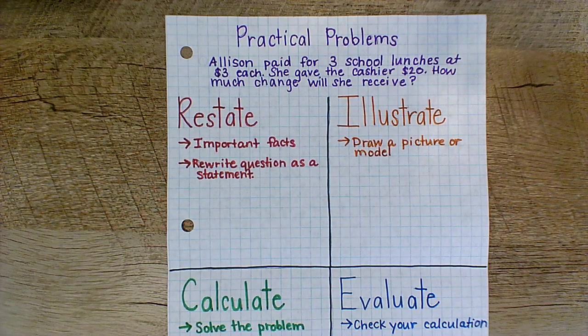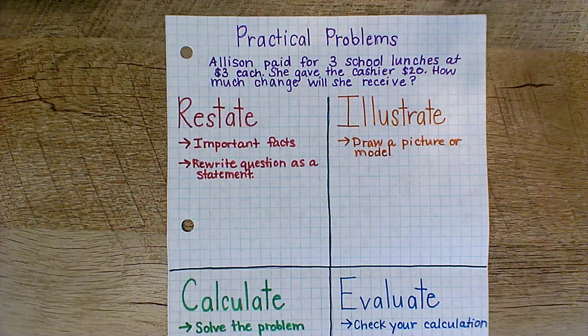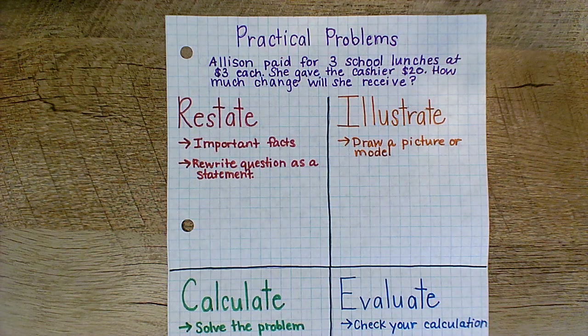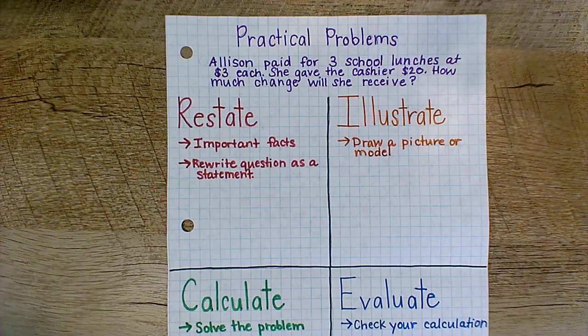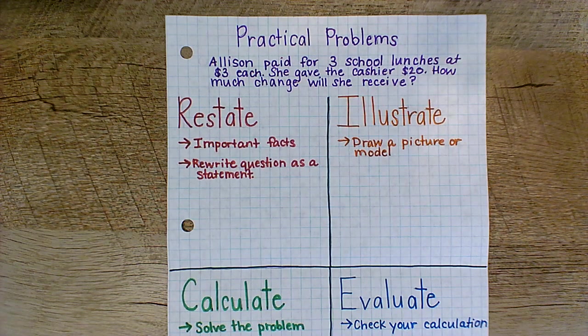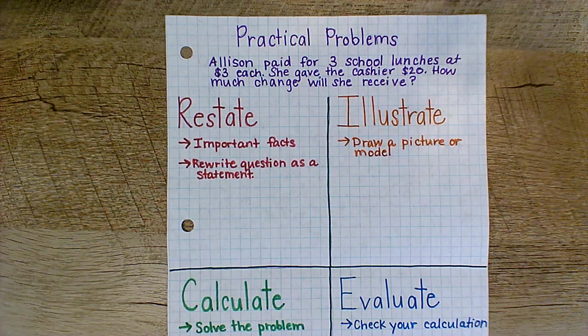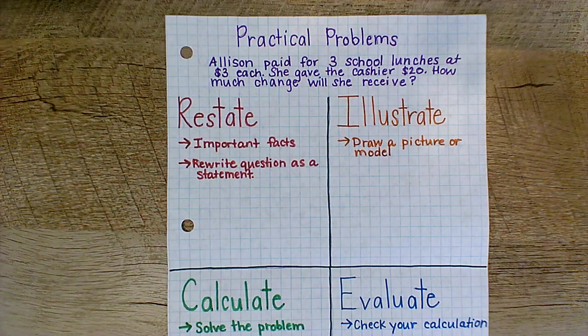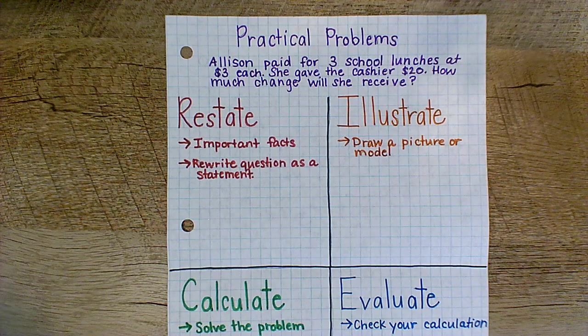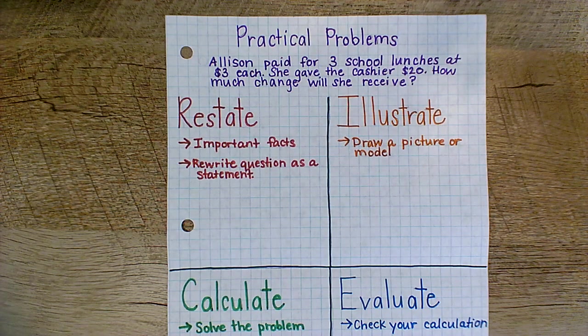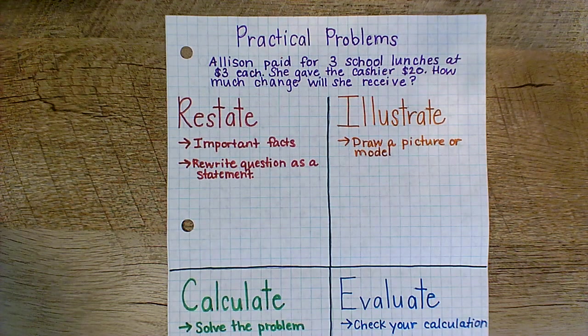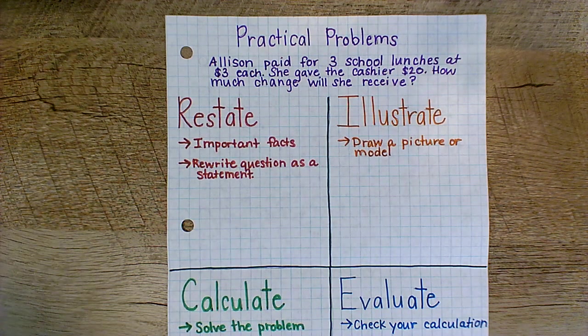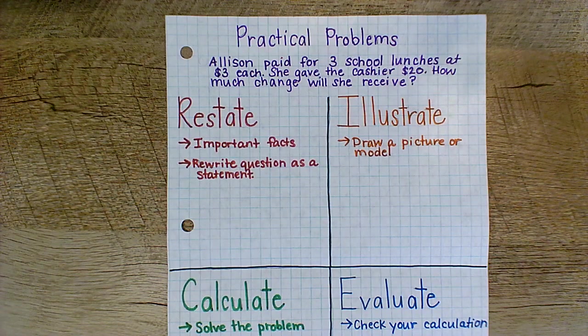So the problem we have here is written in purple. Allison paid for three school lunches at three dollars each. She gave the cashier twenty dollars. How much change will she receive? Let's read it one more time. Allison paid for three school lunches at three dollars each. She gave the cashier twenty dollars. How much change will she receive?